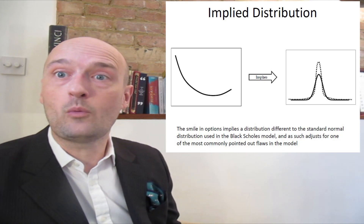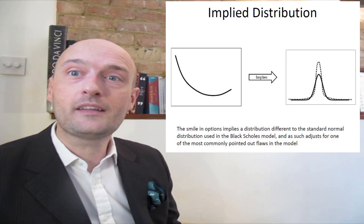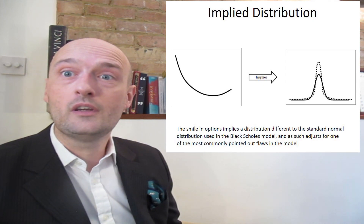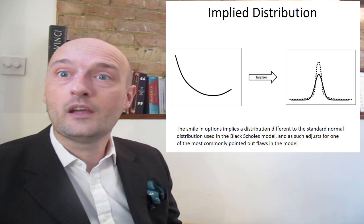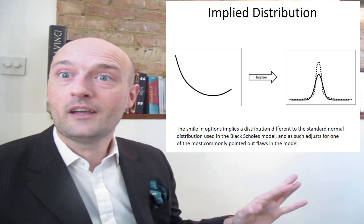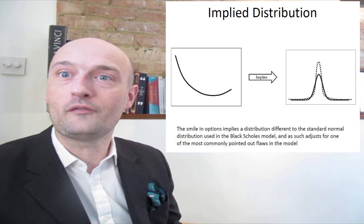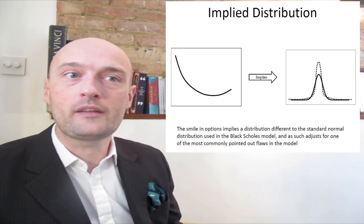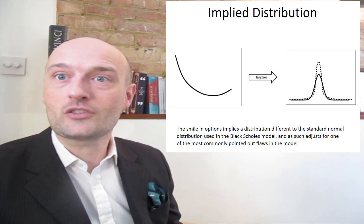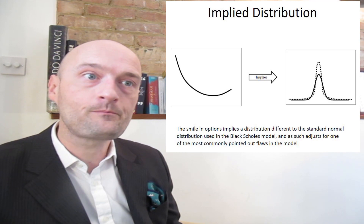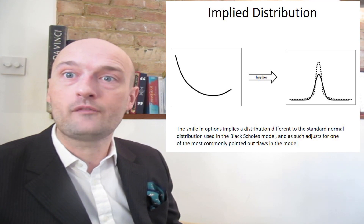What we can take away from smiles, skews, and all things like that is essentially this: if an underlying has a distribution different to the lognormal distribution used in pricing, you're going to see a smile or a skew — some sort of different pricing for different strikes of options on the same underlying. That different pricing is implying the distribution that is actually there versus the distribution used in the pricing model. There are many situations where you might expect quite a different distribution, and option prices that look strange actually make total logical sense.